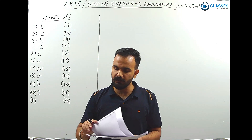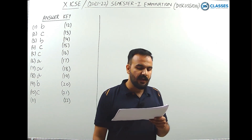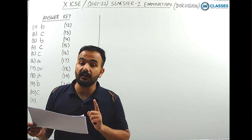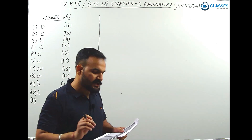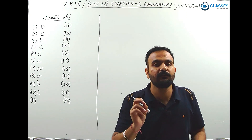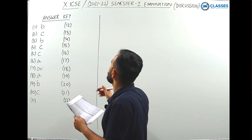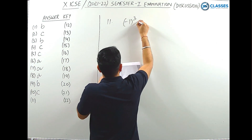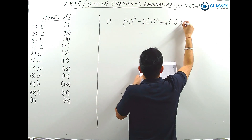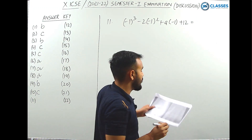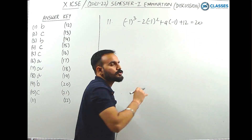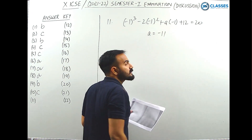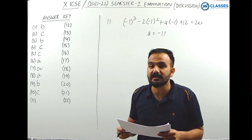Question 11: the polynomial x³ - 2x² + ax + 12, when divided by x+1, leaves a remainder of 20. Find a. Using the remainder theorem, substitute x = -1: (-1)³ - 2(-1)² + a(-1) + 12 = 20. This gives an equation in terms of a. Solving it, a = -11. Option D is the correct answer.